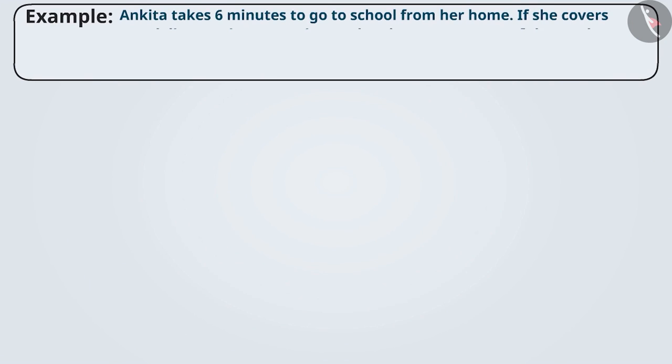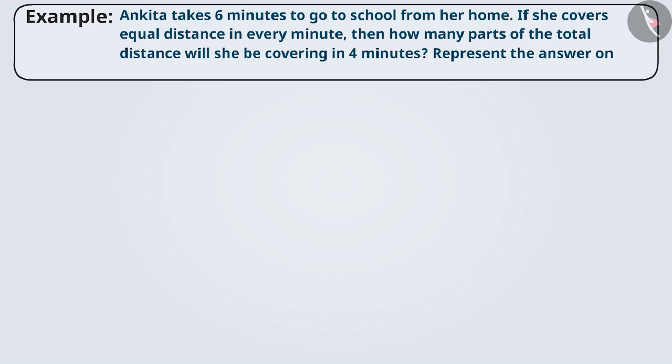Ankita takes 6 minutes to go to school from her home. If she covers equal distance in every minute, then how many parts of the total distance will she be covering in 4 minutes? Represent the answer on the number line.